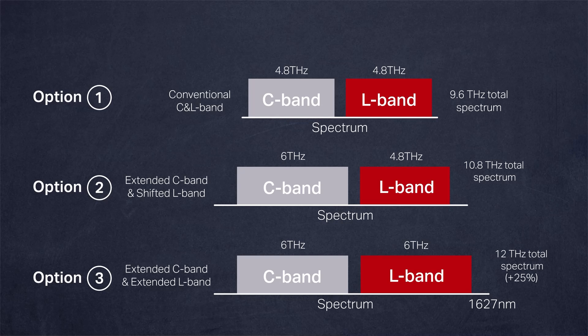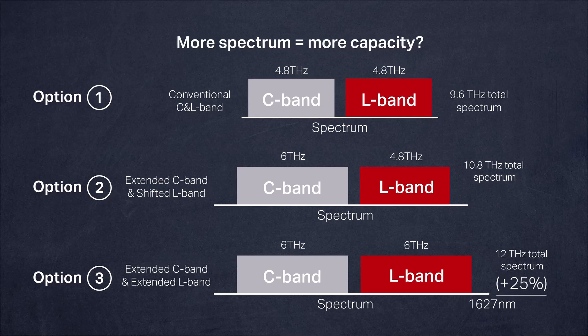This leads to an L band that extends substantially further towards longer wavelengths, as far as 1627 nm. You might assume that the system's capacity scales directly with the increase in bandwidth, and that the best option would be to adopt the offering with the most spectrum. Unfortunately, it's not that easy.